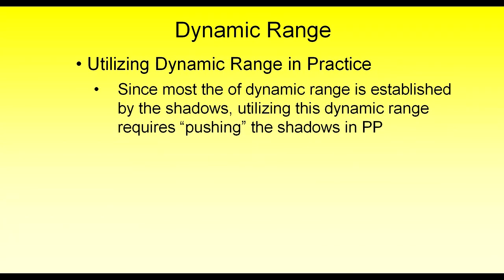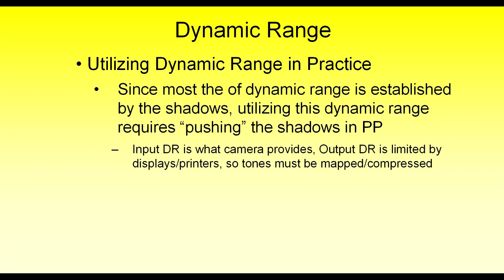To utilize this dynamic range in practice, since most of the dynamic range is established on the low end in the shadows, you really need to push those shadows in post-processing after you've taken the photograph. At the upper end you have the highlights, and so you normally expose so that the highlights are not clipped. To do that, though, requires you to underexpose the shadows. You then need to correct that underexposure by elevating those shadows in post after the fact.